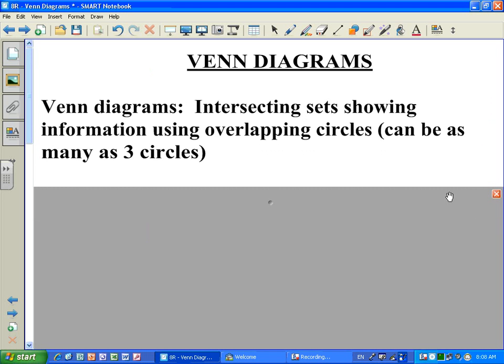Venn diagrams are intersecting sets showing information using overlapping circles, and there can be as many as three circles showing the relationship between the different categories in a word problem.